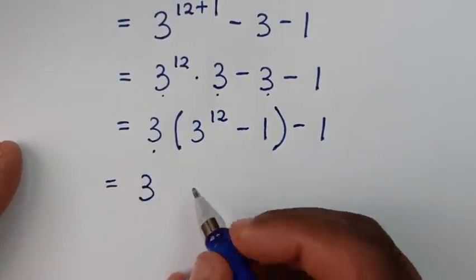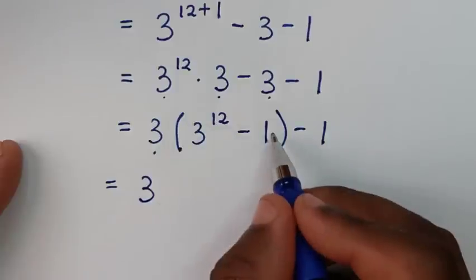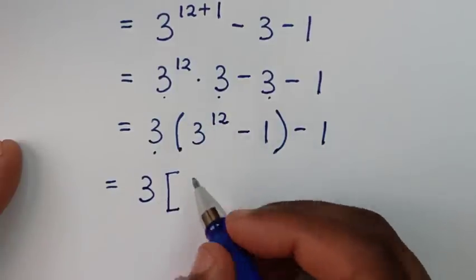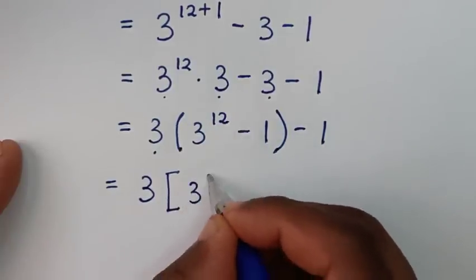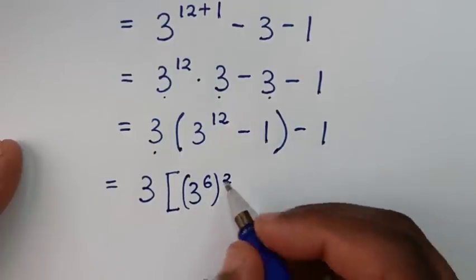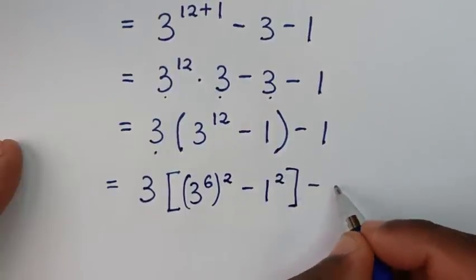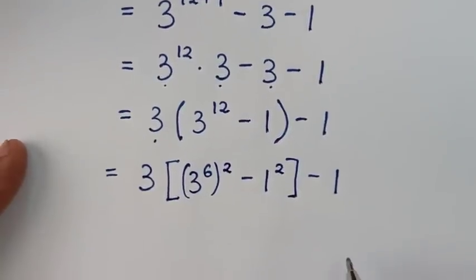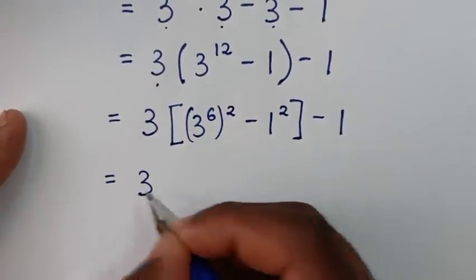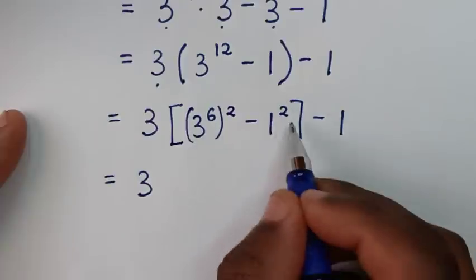Then in the next step it will be equal to 3. From here, inside the bracket we will make this in the form of a perfect square. So it will be: bracket (3 power of 12) — as a square it will be 3 power of 6 — then bracket (3 power of 12 minus 1), then minus 1.